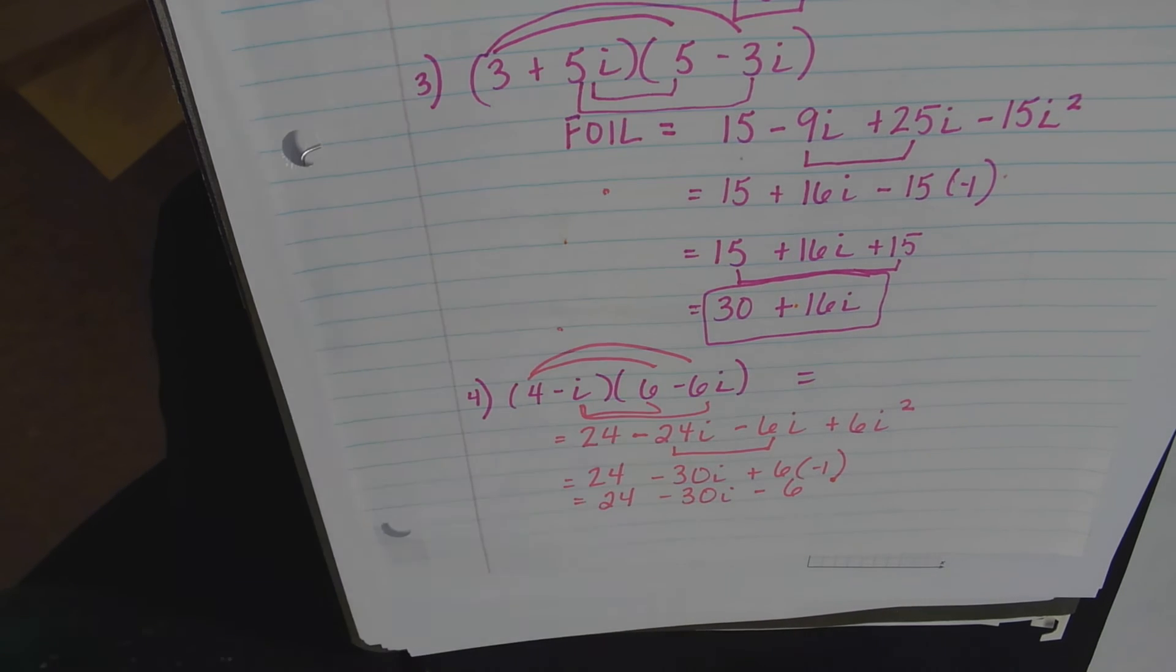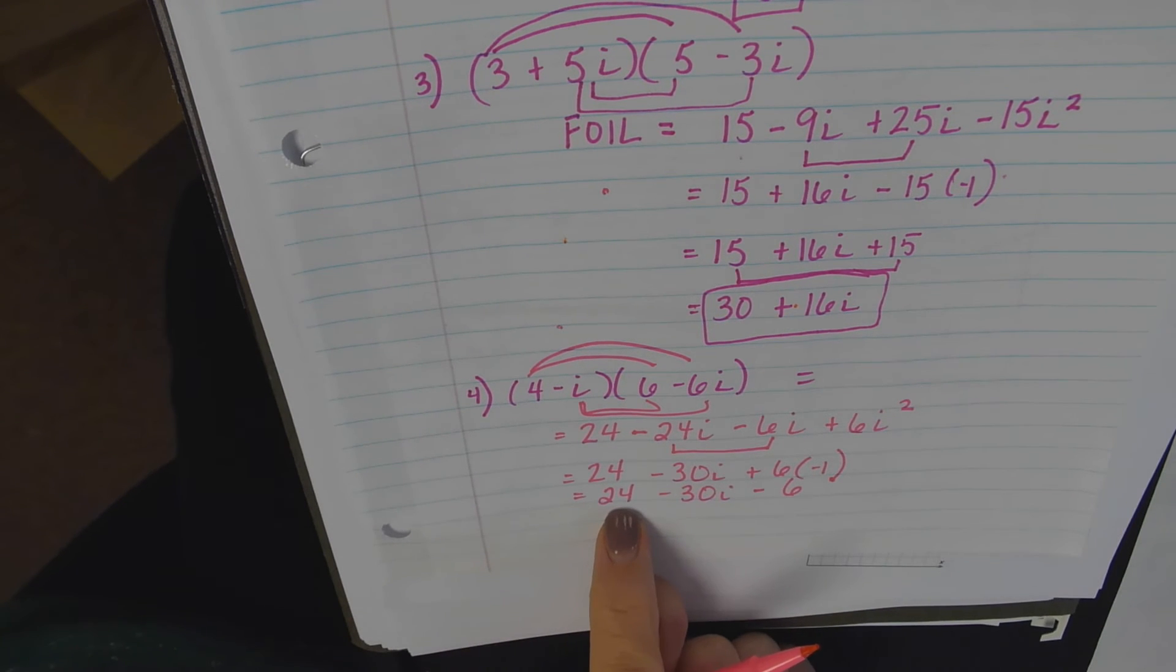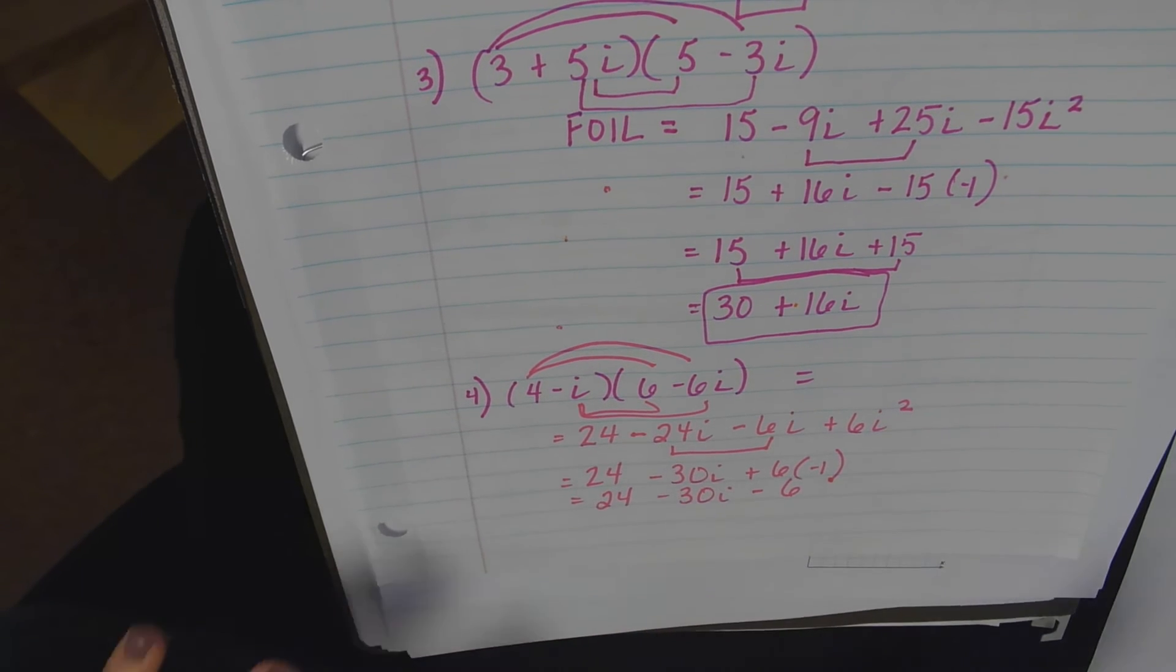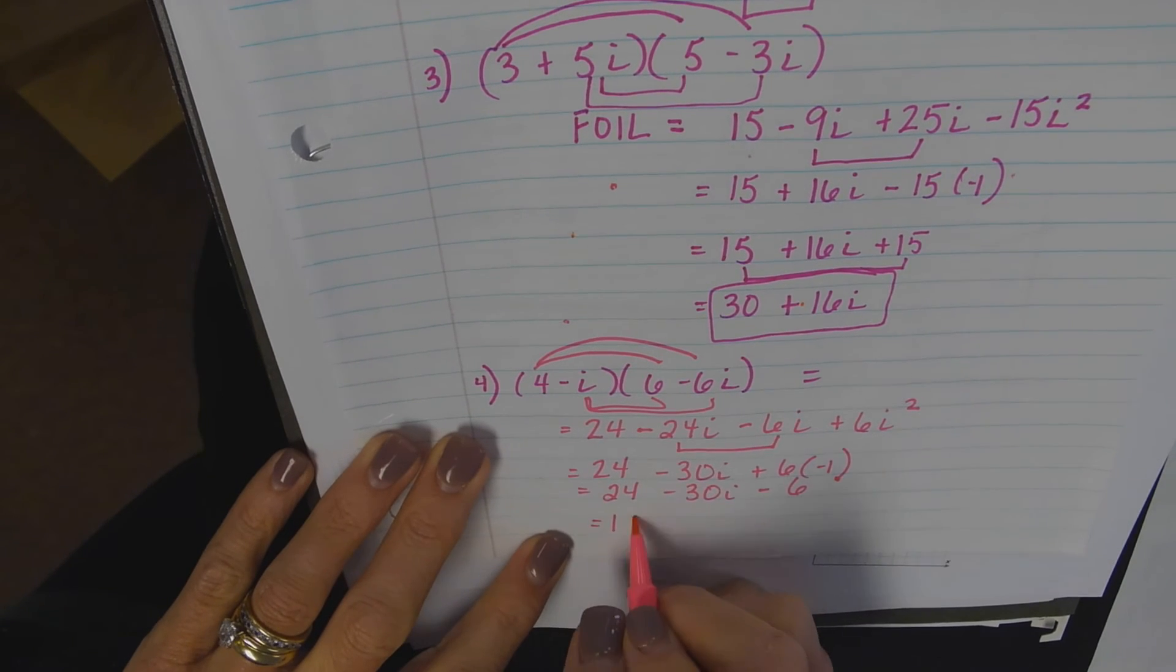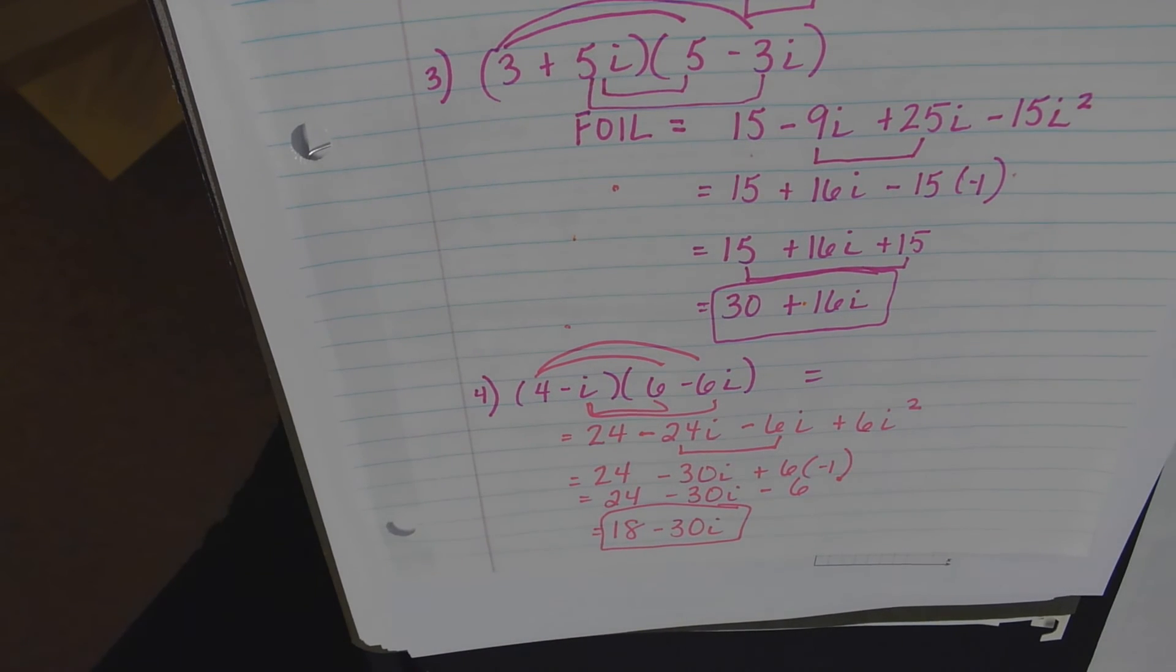One more step and we're done. Combine the like terms. So 24 minus 6 is 18 minus 30i. And that is it.